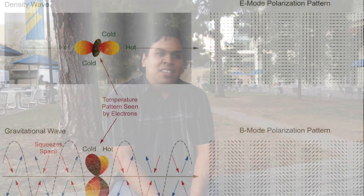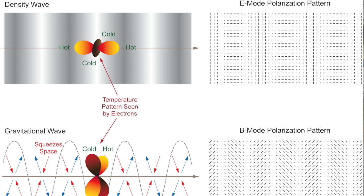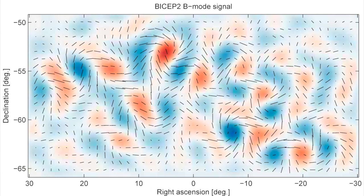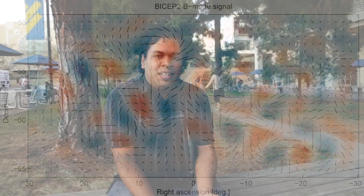The reason I look at E and B modes is that one of those is much bigger than the other. The E modes are parity-even and they have a pretty well-known mechanism of generation. The B modes are only generated by more exotic physics, one of them being gravitational waves.